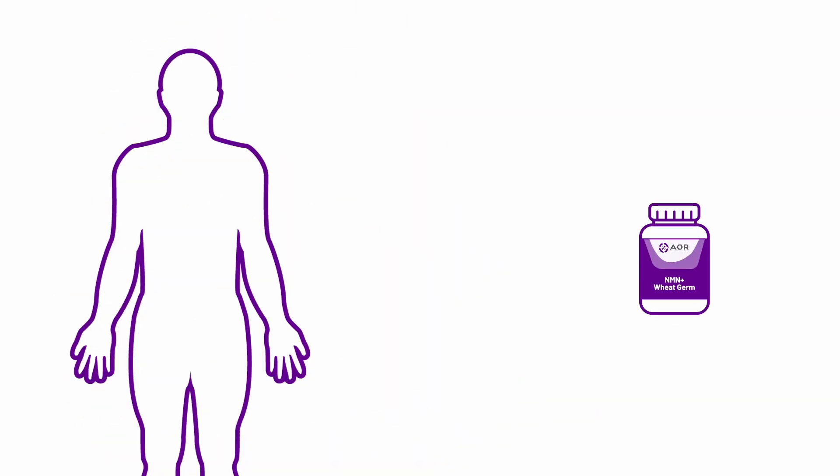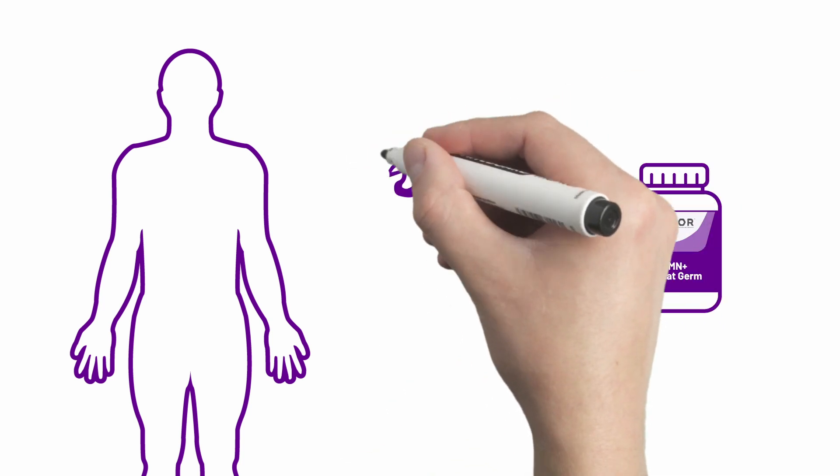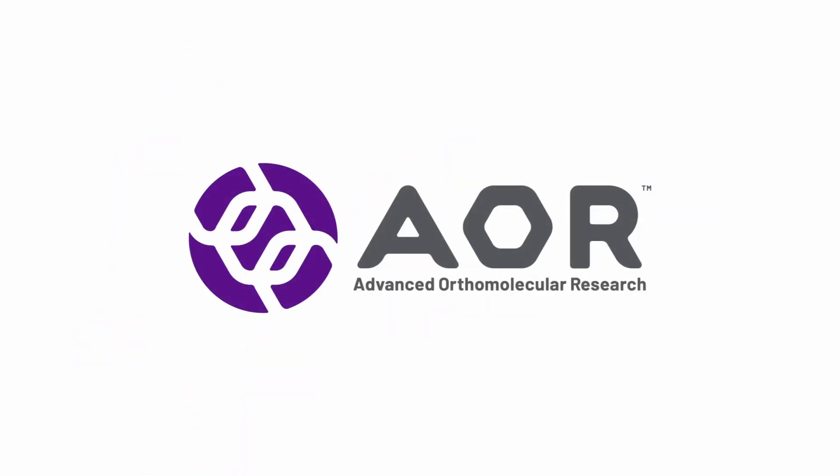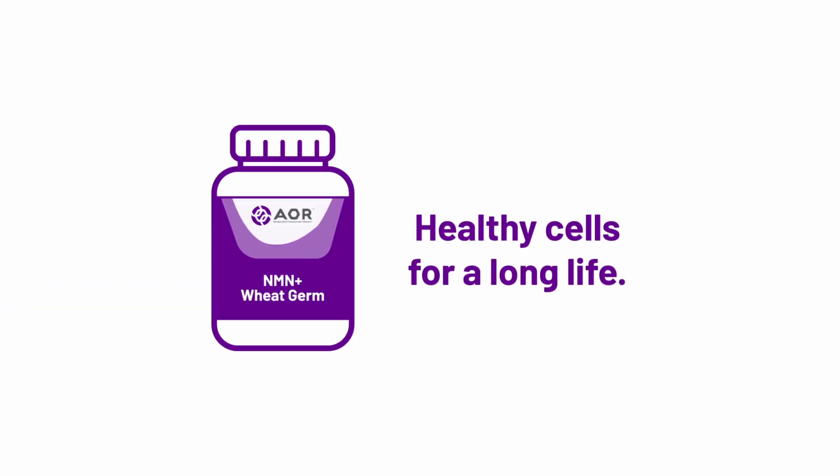AOR has found an innovative and novel approach to promote cellular health and improve the experience of aging with NMN plus wheat germ. It's recommended to take 100 mg of NMN per day and 1 mg of spermidine per day. Visit Advanced Orthomolecular Research online to learn more about NMN plus wheat germ and place your first order today.